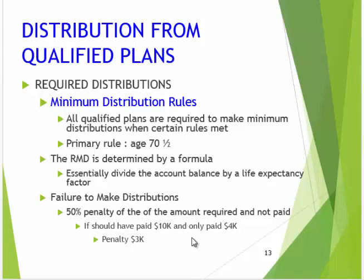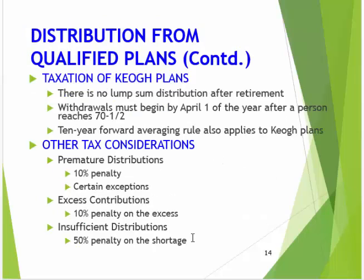So if you should have been paid $10,000 but you only paid $4,000, the difference is $6,000, so the penalty is going to be $3,000. There's a huge penalty for not making required distributions.